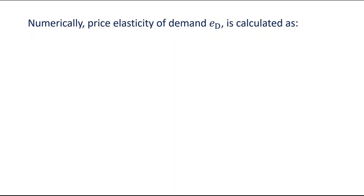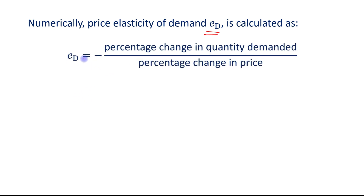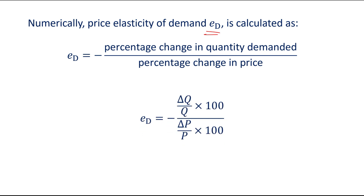Numerically, Price Elasticity of Demand, which is written as ED, is calculated as: minus percentage change in quantity demanded upon percentage change in price. In the next step, we can write it as ED equals minus, where percentage change in quantity demanded is calculated as change in quantity demanded upon original quantity demanded into 100, and percentage change in price is calculated as change in price upon original price into 100.